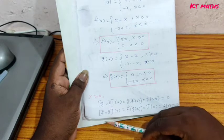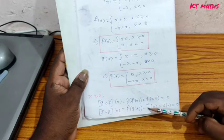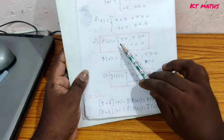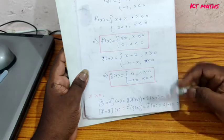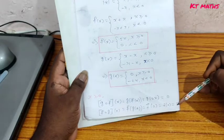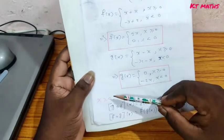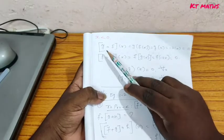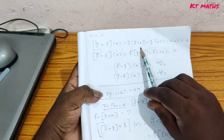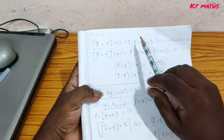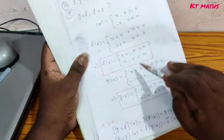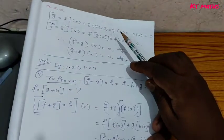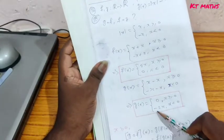For f composition g when x greater than or equal to 0: f of g of x equal to f of 0 equal to 0. When x less than 0: f of x equal to 0, so g composition f of x equal to g of f of x equal to g of 0 equal to 0.